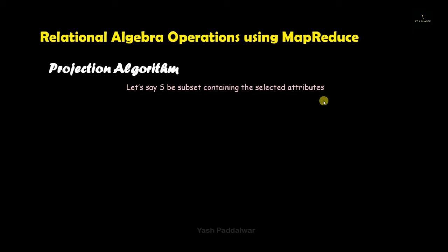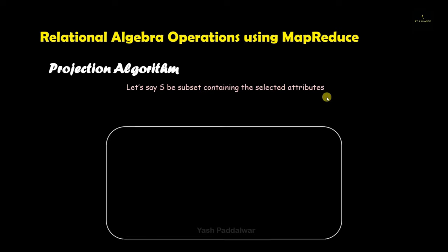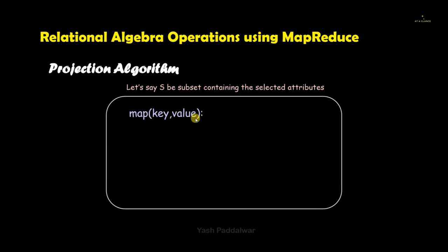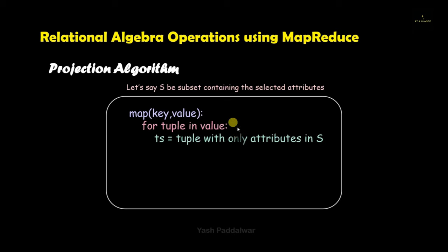If we have three attributes — name, age, and salary — and we want to project only name and age, we can use this projection algorithm. Let's say our subset containing the different attributes we want projected is stored in variable S. S will represent that particular subset of the selected attributes, and it will be used in the algorithm. As you know, the MapReduce algorithm has two tasks: Map and Reduce. In the Map task we will be iterating over all the values, and each value will be stored in a tuple. We will have a variable that stores all the tuples containing only the attributes specified in variable S.